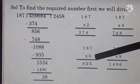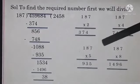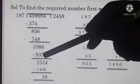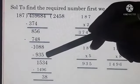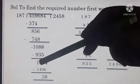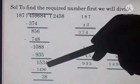187 fives are 935. Now 8 minus 5, 3. 8 minus 3, 5. 10 minus 9, 1. Next number is 4.